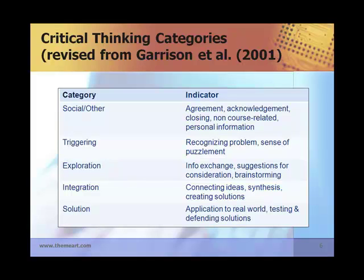The levels are: Social Other — looking for agreement, acknowledgement, closing, non-course-related discussion, and personal information; Triggering — recognizing a problem or stating a sense of puzzlement; Exploration — information exchange and brainstorming ideas; Integration — connecting and synthesizing ideas; and finally, the fifth level is Solution — applications to real-world situations, and testing and defending solutions.